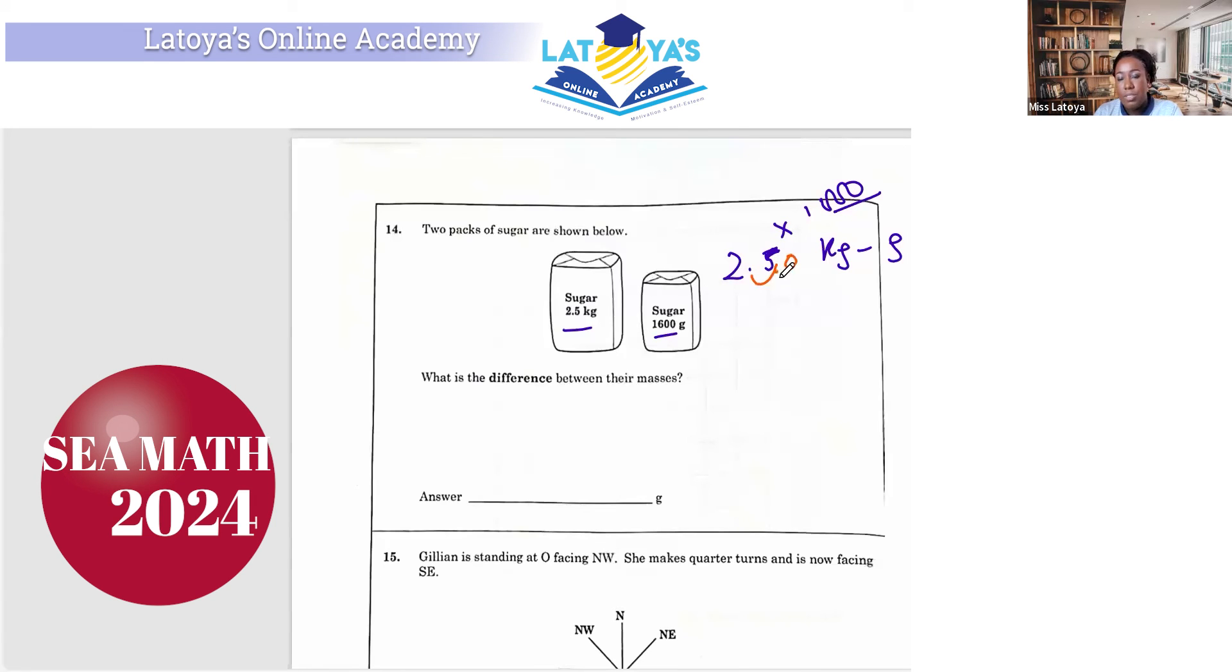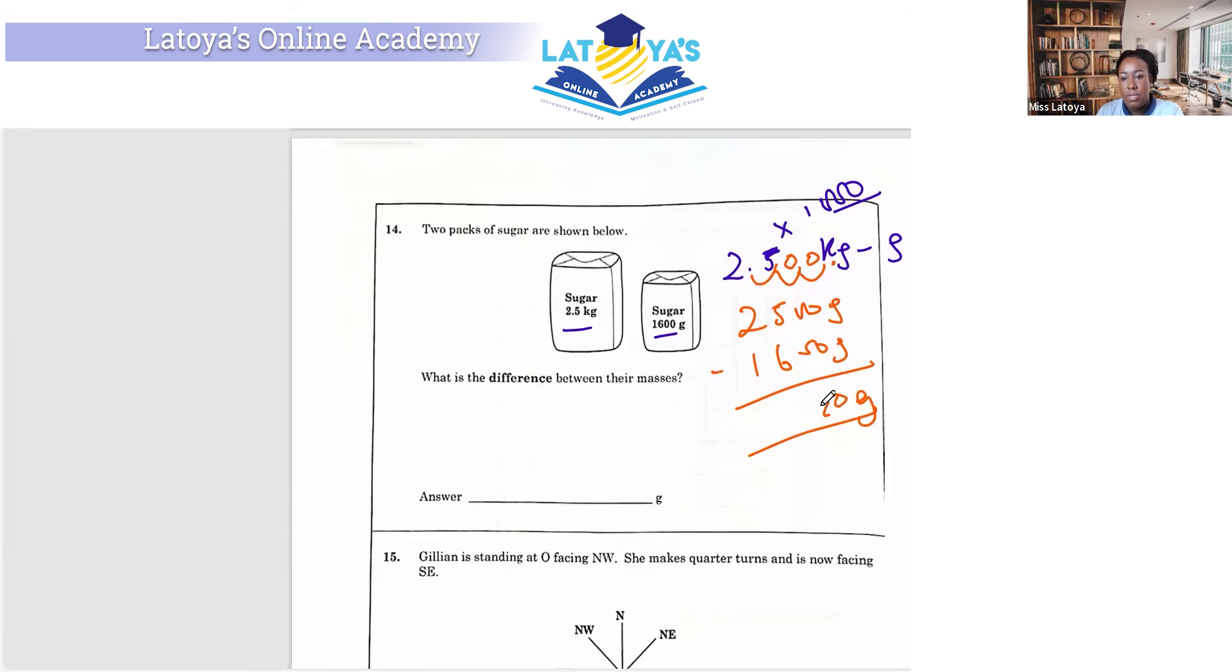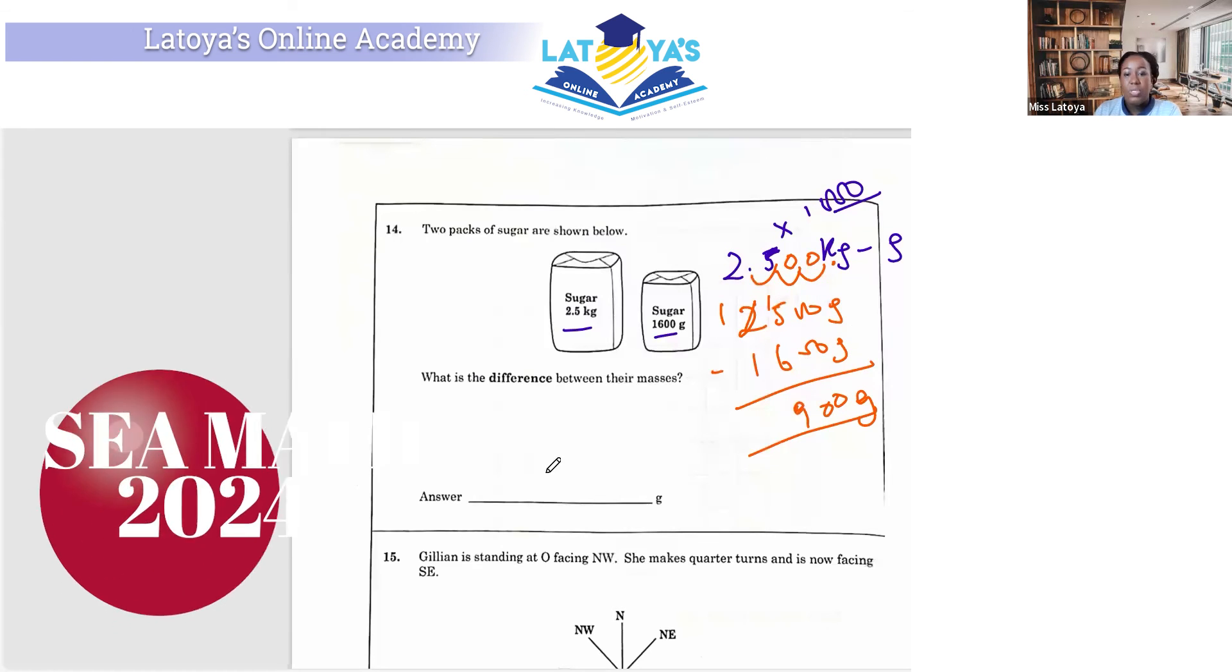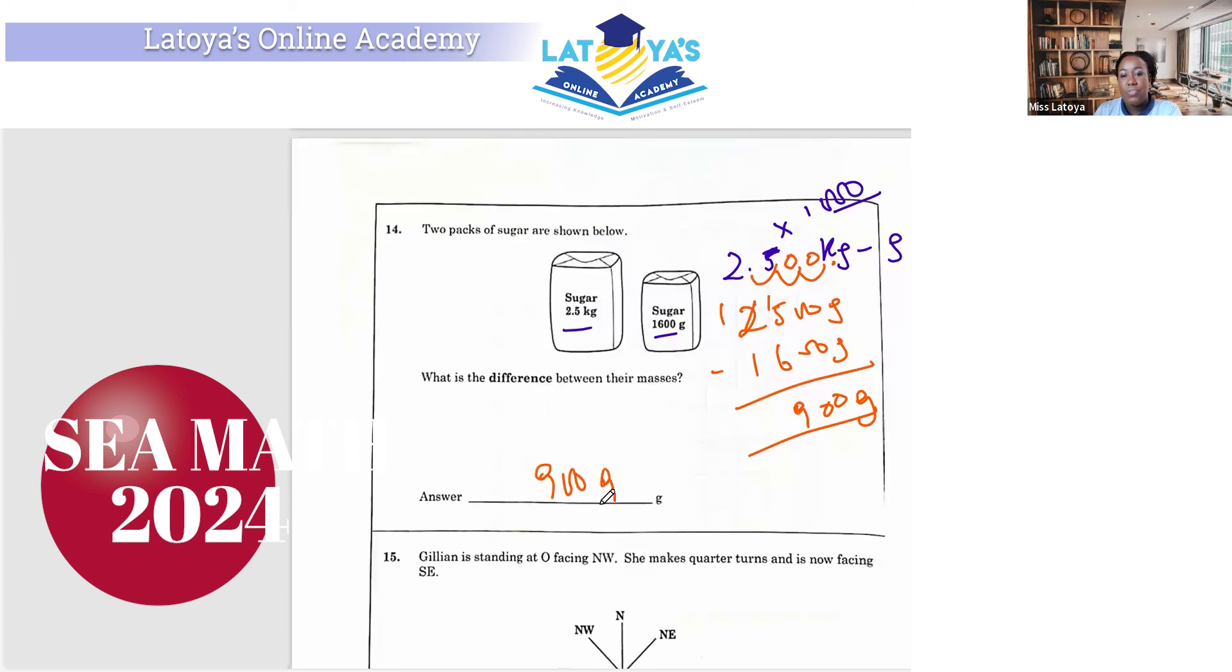1, add a 0, 2, add a 0, 3. So we are getting 2,500 grams. And we subtract 1,600 grams from that. We are getting a difference of 900. Let's work it out. 5 can't subtract 6, so we need to regroup. 15 take away 6 is 9. So the answer is 900 grams.